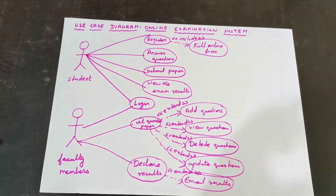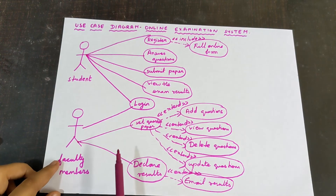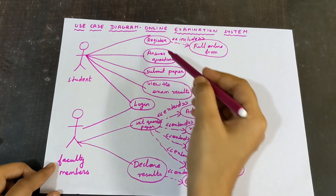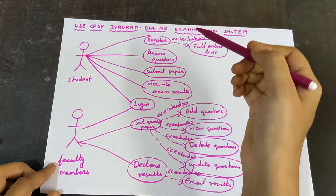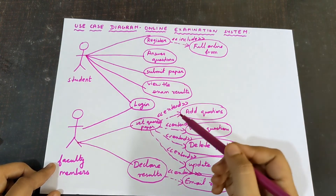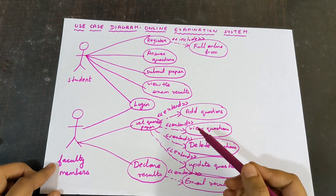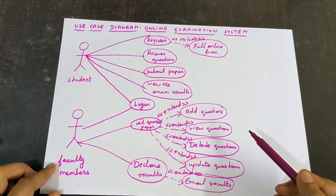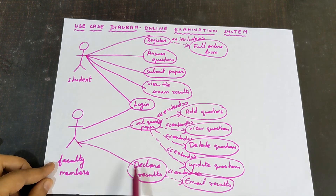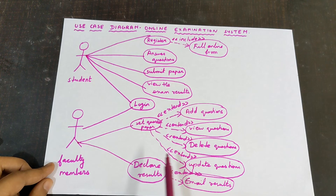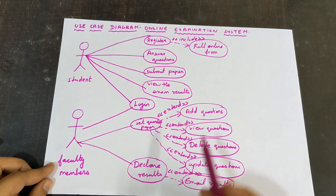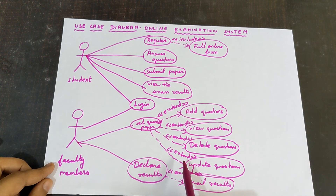To summarize the steps for drawing a use case diagram: first draw the actors, then draw the use cases, then apply stereotypes — include for compulsory steps and extend for optional steps. Connect the actor and use cases using connectors. Remember to write each use case inside an oval shape, and draw the stereotype as a dotted arrow line with the keyword written in double angle brackets.